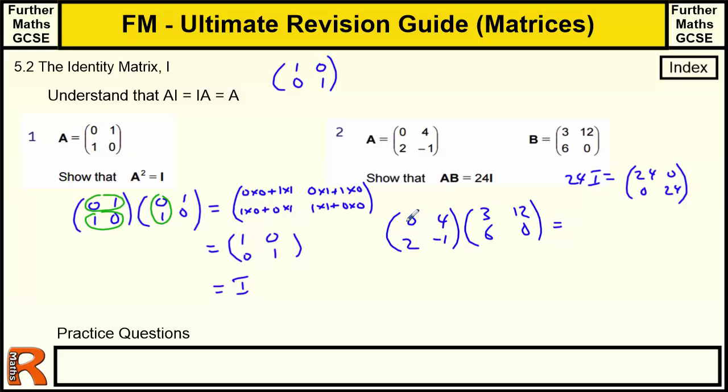So we end up with 0 times 3, plus 4 times 6. Then we've got 2 times 3, minus 1 times 6. 2 times 3, plus minus 1 times 6. Well, that's just minus 1 times 6.